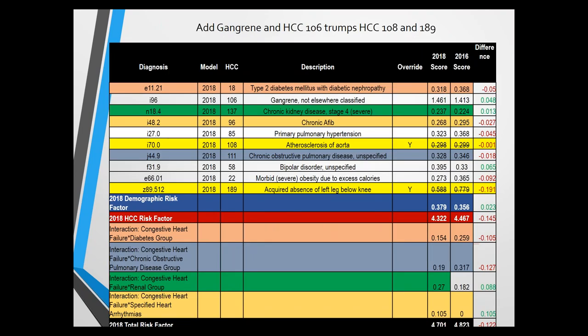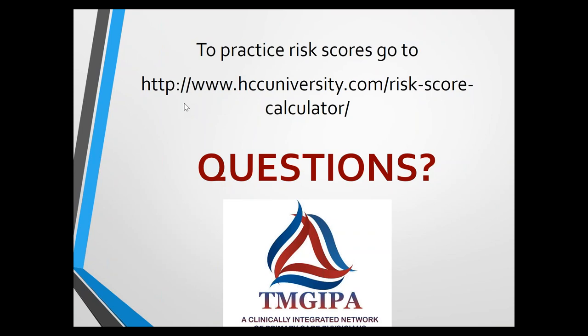Adding gangrene moves the patient to HCC106, which overrides HCC108 and even the below-knee amputation code, removing approximately 0.9 in RAF but gaining 1.461 for gangrene. A diabetes code with gangrene would still yield 1.461 plus the 0.318. For practicing risk score calculations, a calculator is available online. If there are specific questions, they can be answered now. Thank you and good night.